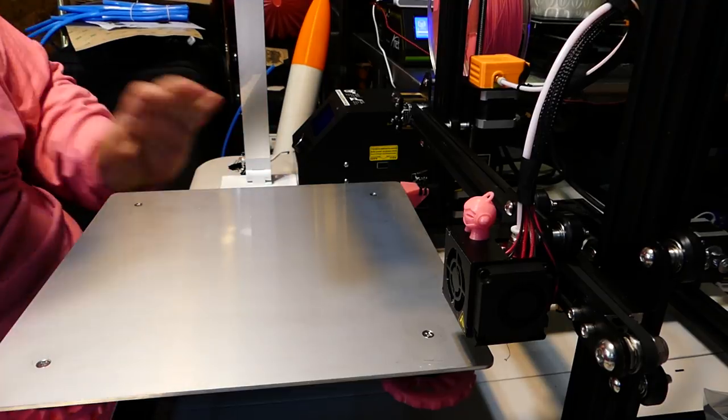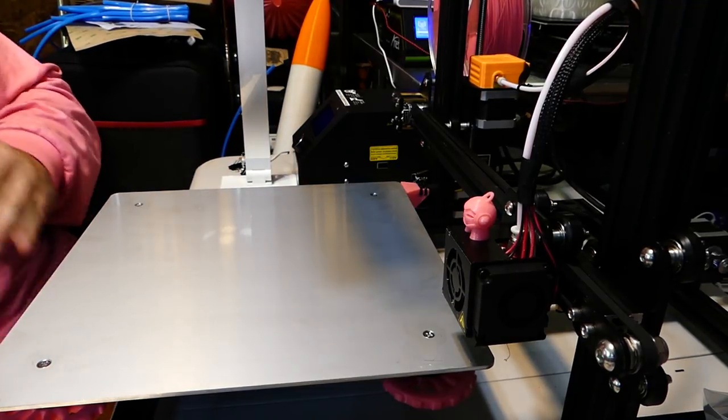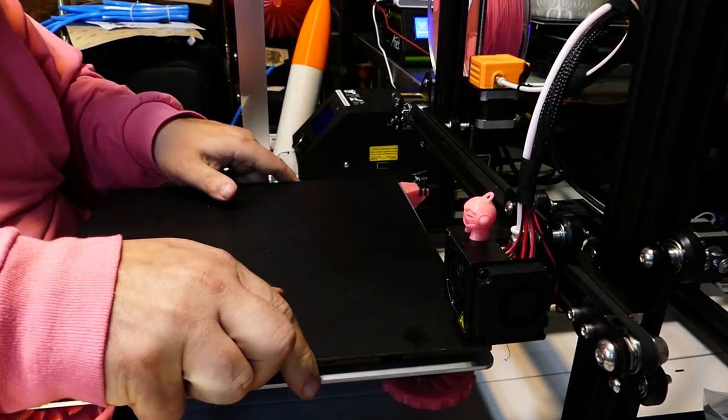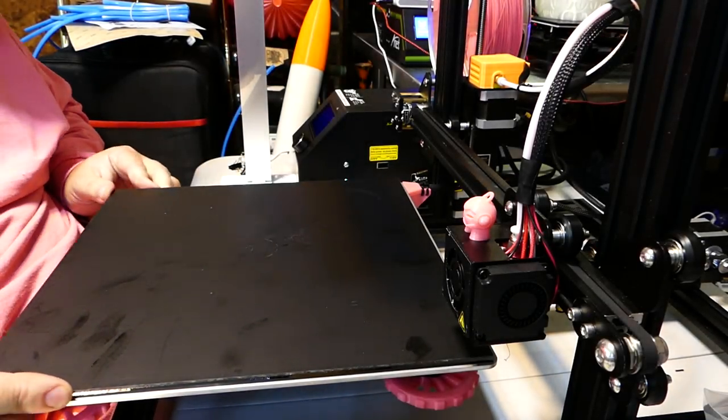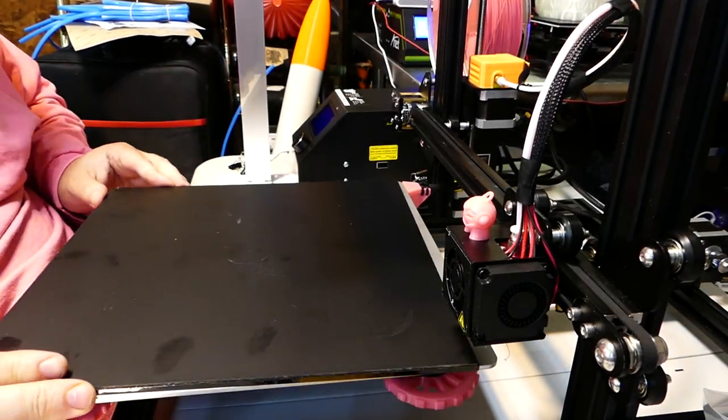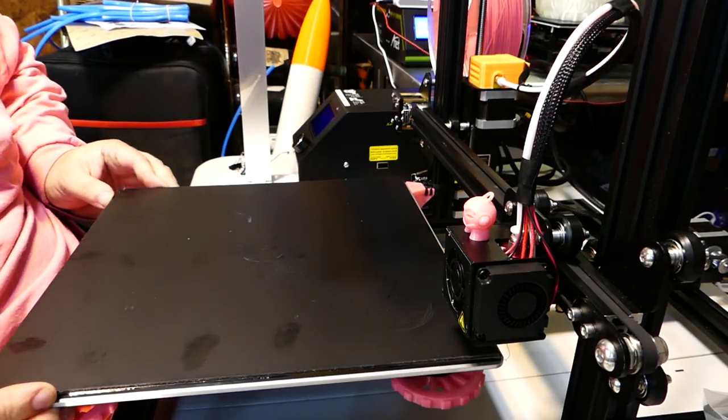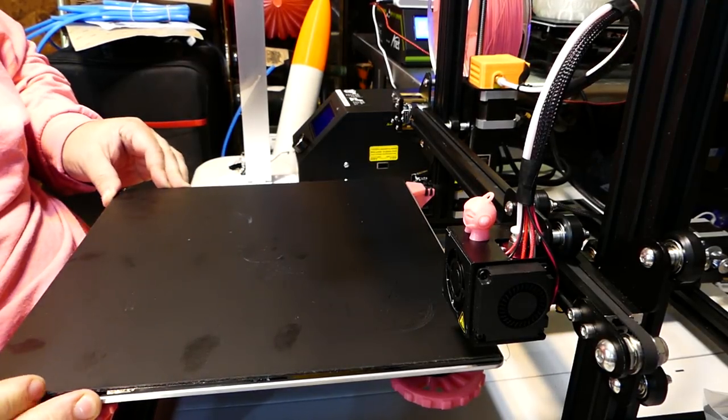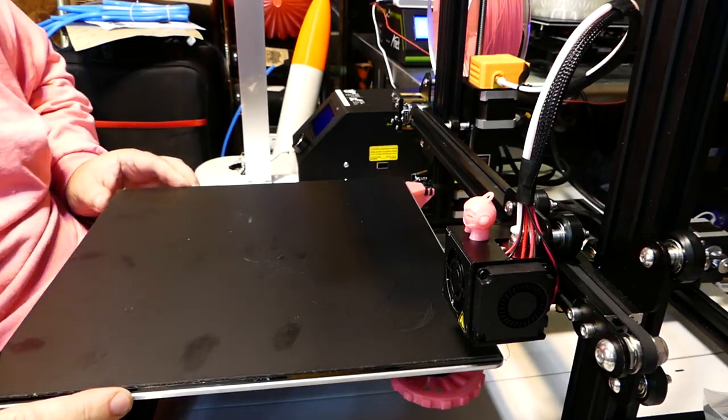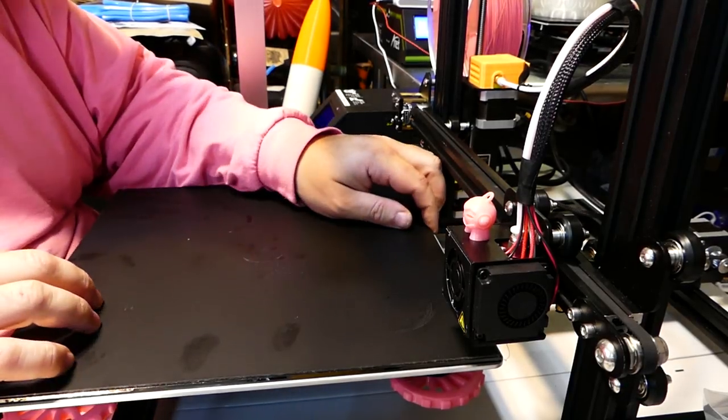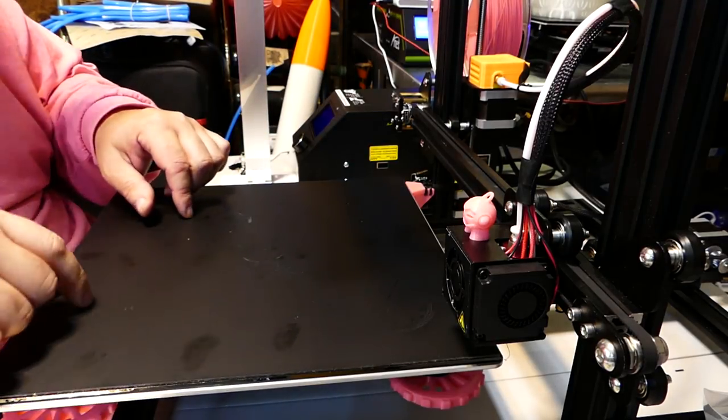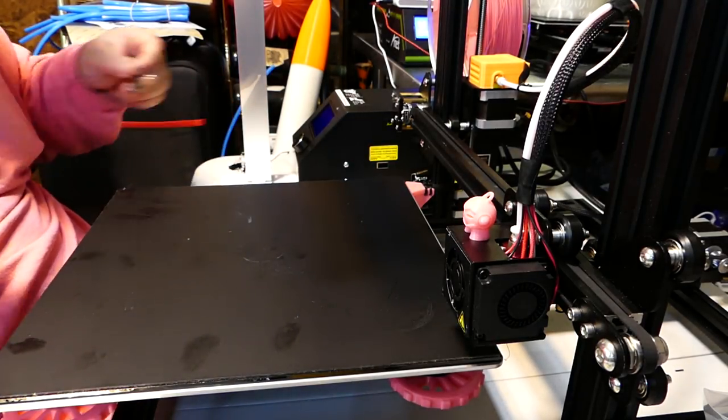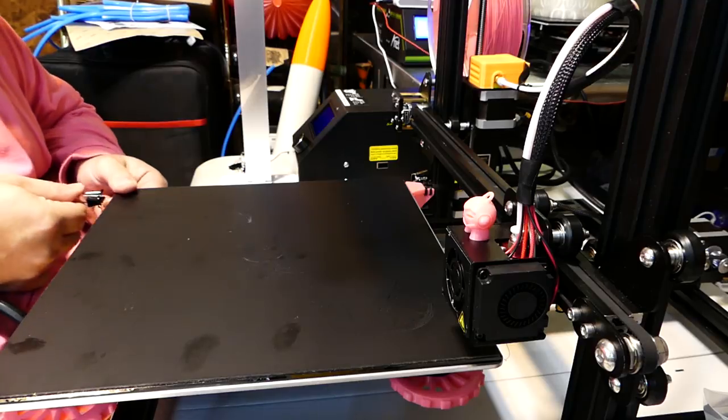Put my print bed Z back on. Glass plate. Now the glass plate is slightly smaller than the print bed. So try to align it left and right evenly. Front and back evenly. Otherwise your nozzle might actually try to print off the edge a little bit. It's not a big deal. That's usually skirt or something like that. But might as well get it right.